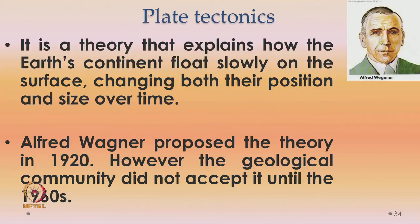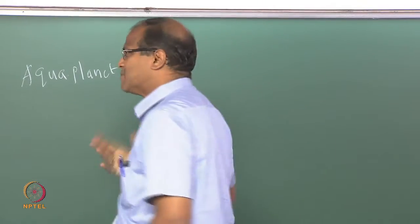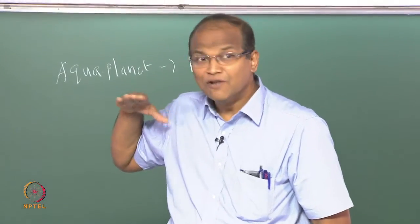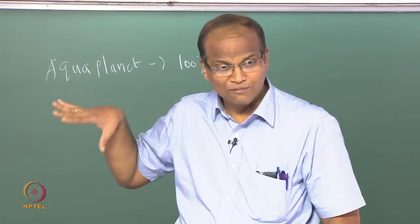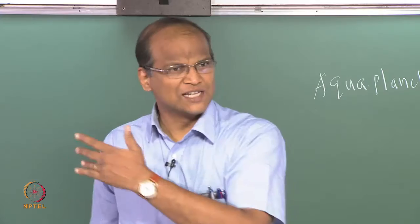That is Alfred Wegener — 1880 to 1930, lived for 50 years, German. He figured out and proposed the theory of plate tectonics. Plate tectonics is the theory that explains how the earth's continents float slowly on the surface, changing both their position and size over time. He is saying that everything is floating on the mantle. He proposed this theory in 1920, but people did not accept it for a long time. It took about 30 to 40 years — the geological community accepted this theory only in the 1960s, so acceptance is around 50 years old.